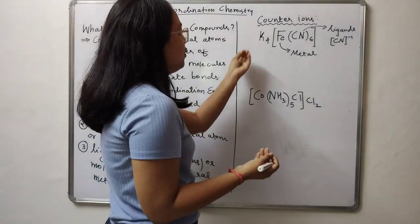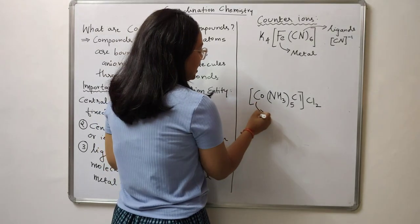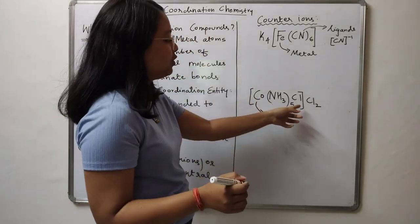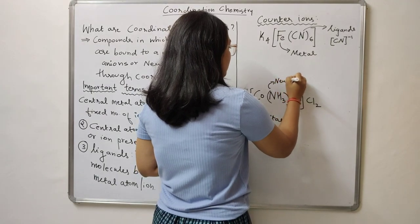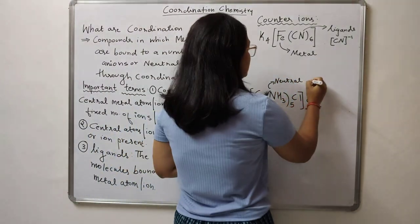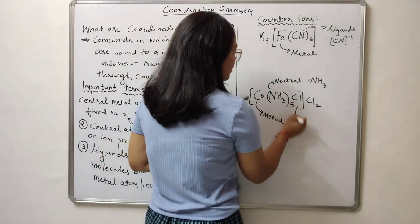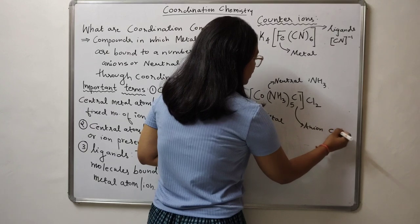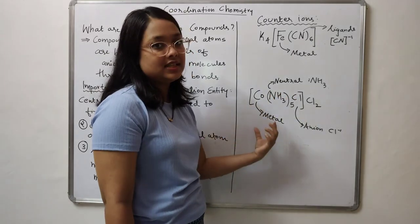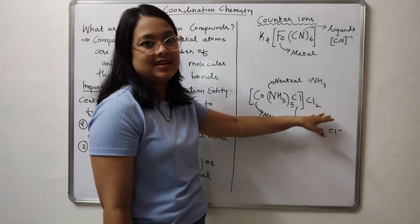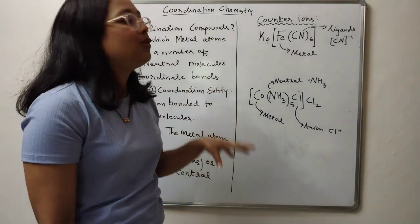Now we need to identify what role the potassium ion plays in the first example. Similarly, in the second example, cobalt is the metal, and ammonia and chloride are both ligands. Ammonia is NH3 — a neutral ligand that does not carry any charge. Chloride is anionic, carrying a charge of minus 1. So potassium in the first example and chlorine in the second are known as counter ions.